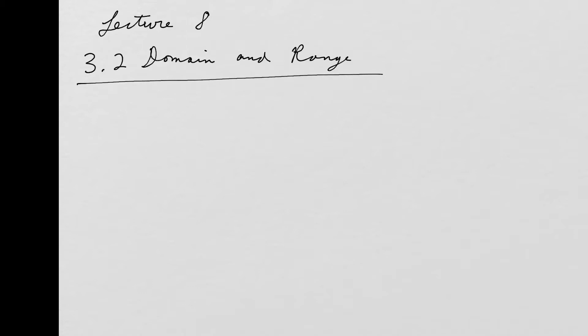So remember, in general, you can think of the domain as the set of inputs and range as being the set of outputs. Let me illustrate this by looking at a function as a set of ordered pairs. I'll start with that first.